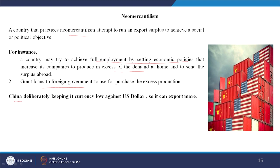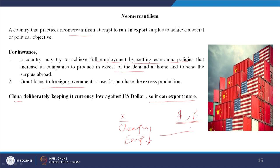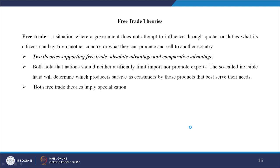Looking at China: China has deliberately been keeping its currency low against the US dollar so that it can export more. Japan has also devalued its currency to a large extent. When you devalue your currency, the home country's currency becomes much cheaper compared to the dollar or pound. During imports it becomes costly, but when you export, countries buying with dollars find it much cheaper because the currency has devalued — they can buy more with the same number of dollars. Countries producing in large amounts deliberately control or devalue their currency.